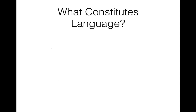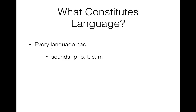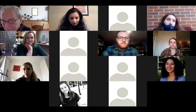Every language has sounds — individual phonemes — and depending on how you arrange them in words you get different meanings. Changing 'pat' to 'bat' gives a different word with a different meaning. Words can be simple or complex — 'rainbow' is a complex compound word combining two words. Words can also be extremely complex, as I'll demonstrate.